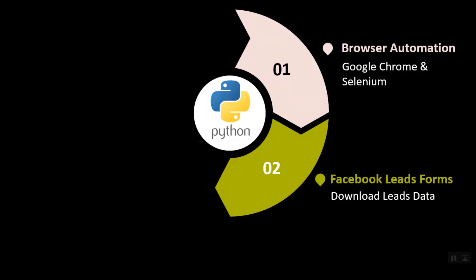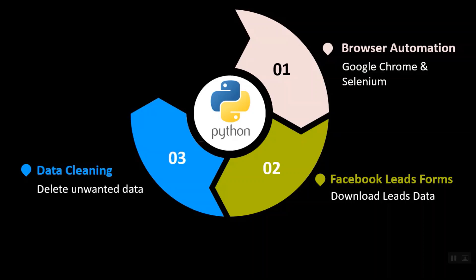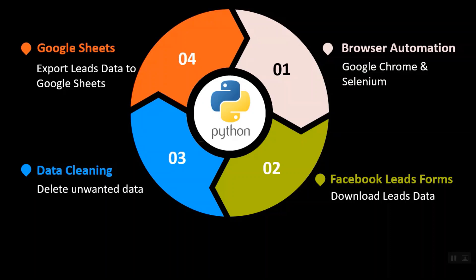Once this is done, we will automate leads download and extract data that is required to be pasted to Google Sheets. We all know that not everything downloaded from Facebook lead ads is meaningful data for us — there are a lot of unwanted columns in the exported CSV that are of no use. Hence, we will do some data cleaning before taking the last step: uploading data to Google Sheets, for which we will be using the Google Sheets API connection.